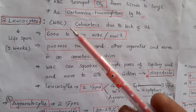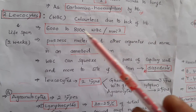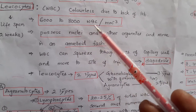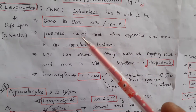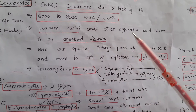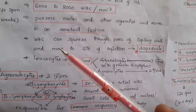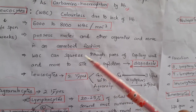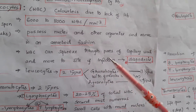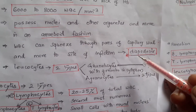Leukocytes, also called WBCs, are colorless due to the lack of hemoglobin. There are about 6,000 to 8,000 WBCs per cubic millimeter of blood. They possess nuclei and other organelles and move in an amoeboid fashion. WBCs can squeeze through the pores of capillary walls and move to the site of infection — a movement called diapedesis, which is very important for NEET.